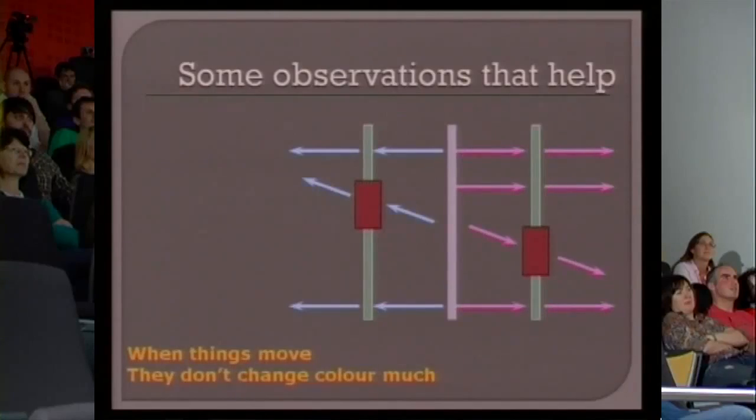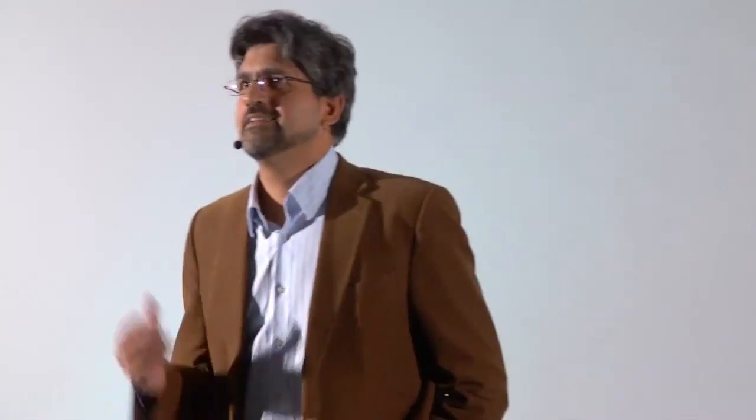It turns out that some observations could be made to help make this problem solvable. The first one is that when things move, they don't change color very much — when I move from here to here in this scene, I don't change color very much. Another thing is that because of the arrangement of the cameras, the motion is quite smooth — the motion from one frame to the next is not much different from that frame to the following frame.